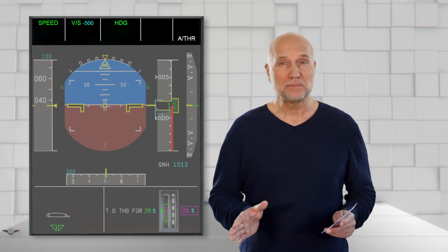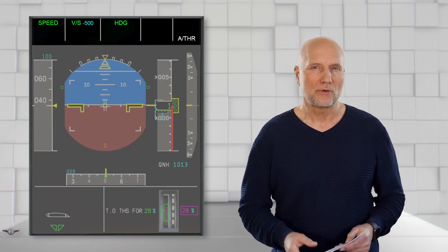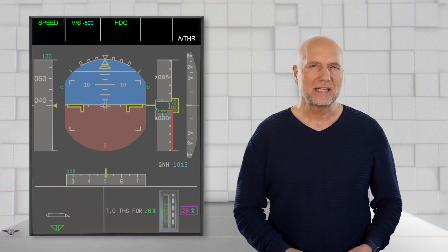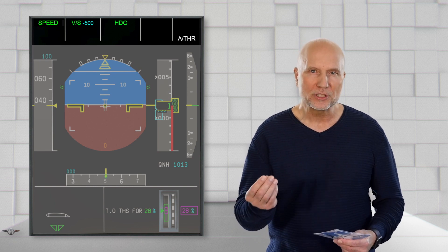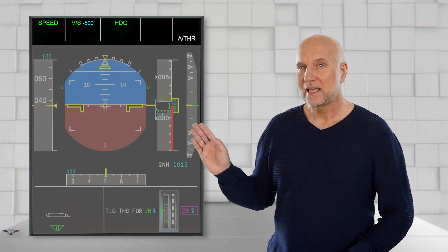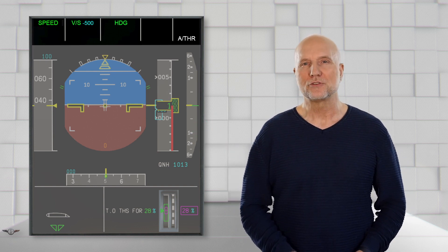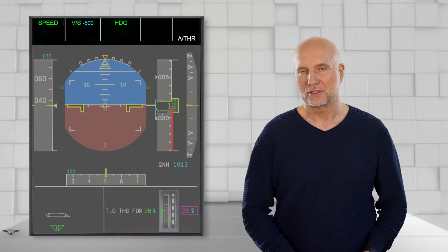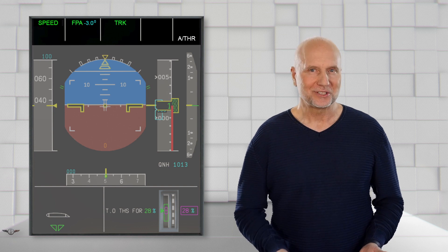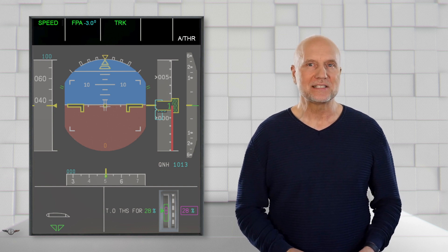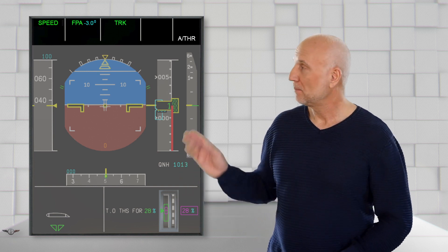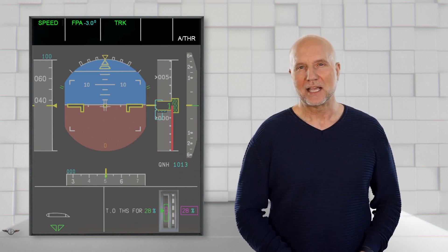With vertical speed and a selected negative or positive value set on the AFS-CP, the mode will engage by pulling the vertical speed knob on the AFS-CP. In our case, the aircraft would descend with a vertical rate of 500 feet per minute. When flight path angle mode is selected, a climb or descent angle can be selected and is displayed on the FMA. In my example, a descent angle of 3 degrees.